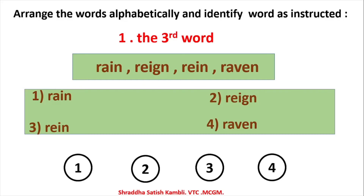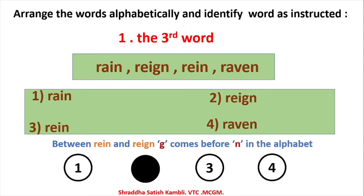So the word that comes third is REIGN (R-E-I-G-N). It will not take so much time once you get used to it. Now you know the meaning of these words: RAIN means barish, REIGN means the rule of a king, REIN is the device used to control horses, and RAVEN is a black crow.